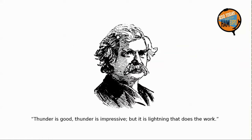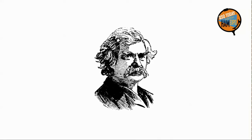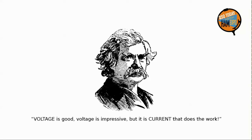Mark Twain once wrote, 'Thunder is good, thunder is impressive, but it is lightning that does the work.' When we think about antennas, we might say something similar: voltage is good, voltage is impressive, but it is current that does the work. It's the current that upsets those electrons and causes them to emit those electromagnetic waves. And that's why we want to maximize current flow in our antennas.